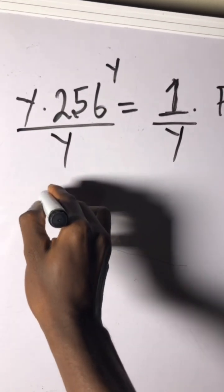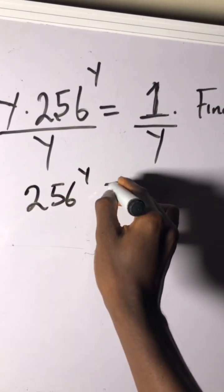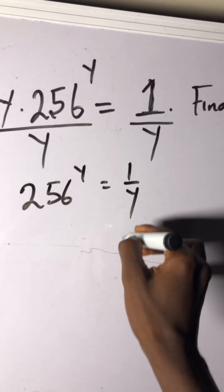I'm left with 256 to the power of y equals 1 over y. Okay, we need to deal with this index first.